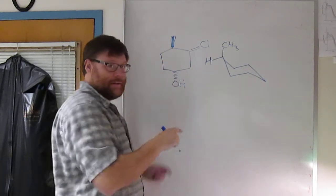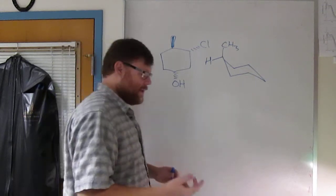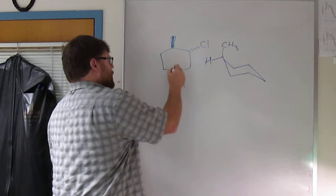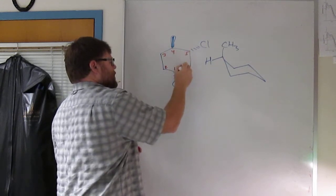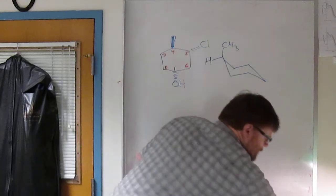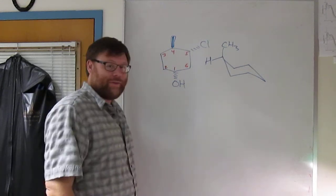The OH has a 1, 4 relationship. This would be named as a cyclohexanol. This would be 1, 2, 3, 4, 5, and... wait, back up. I just made a mistake. Hit pause and figure out what the mistake is I just made.